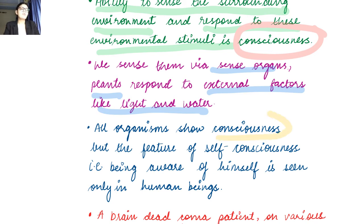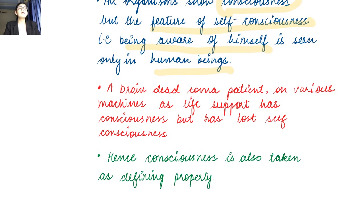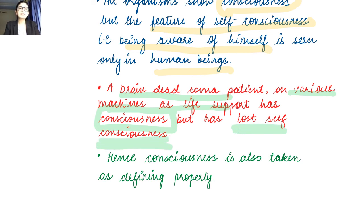All organisms show consciousness, but the feature of self-consciousness — being aware of yourself — is seen only in human beings, according to NCERT. Though if you look it up, many land mammals, especially primates, also exhibit self-consciousness. For example, consider a brain-dead coma patient on life support: they have consciousness but have lost self-consciousness. That is the difference — consciousness versus self-consciousness. Hence, consciousness is also taken as a defining property.